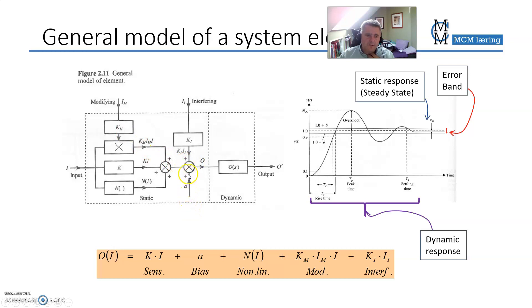So all those, that one and these two boxes here, they are the modifying environmental effects. And then you have the bias here, which has nothing to do with input really. It is a number that is independent of the input, and so is the interfering environmental effect. That is also independent of the input.